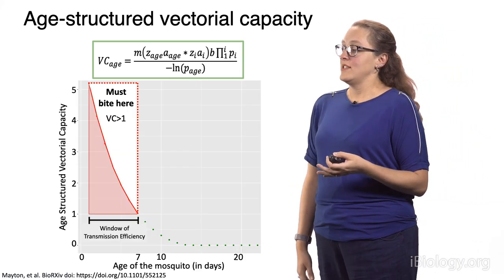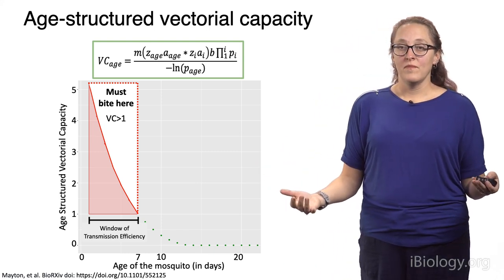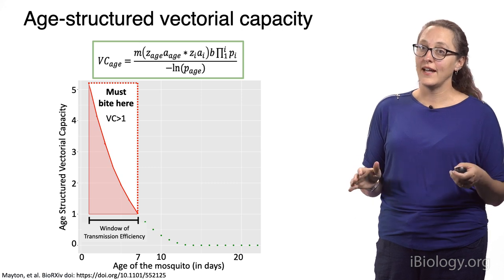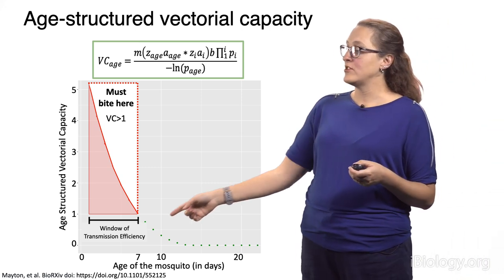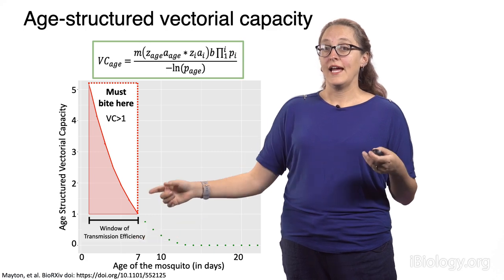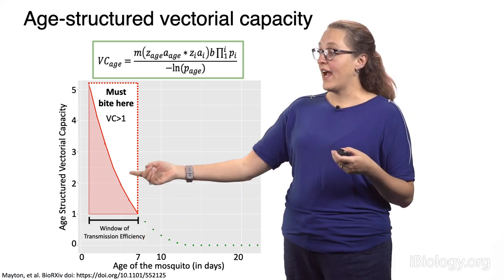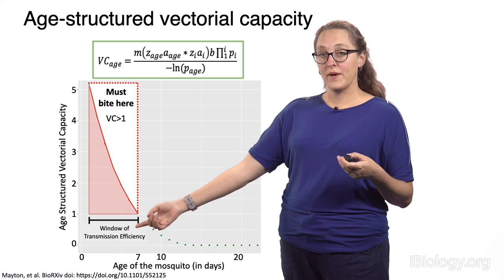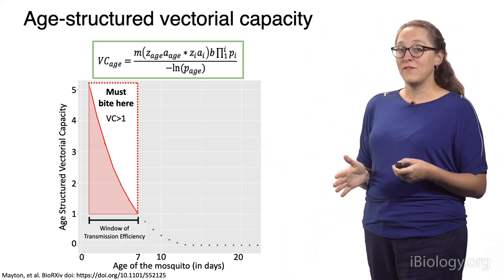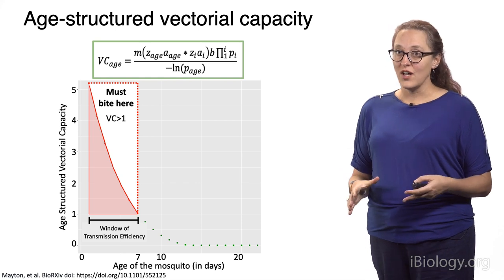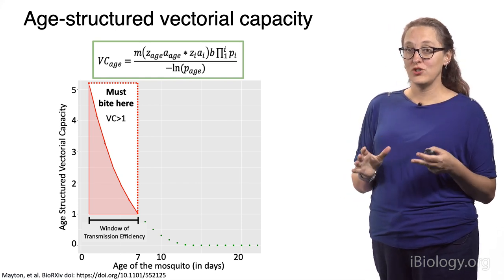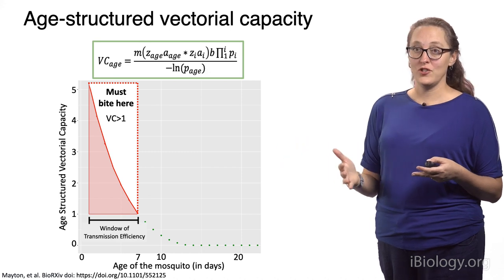What this shows us is that this inefficient system, which we deemed probably wouldn't account for a lot of transmission, is actually age-dependent. If the mosquito takes a bite within the first seven days of life and gets the virus, this actually has a vectorial capacity of greater than one. So what we've shown is that this inefficient system, on average, can actually contribute quite a lot to the transmission system in an age-dependent manner.